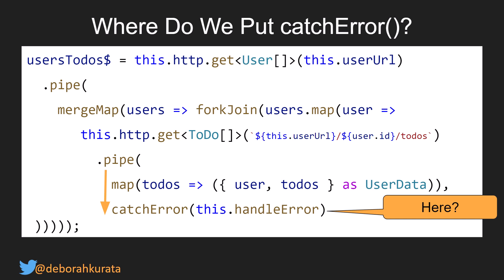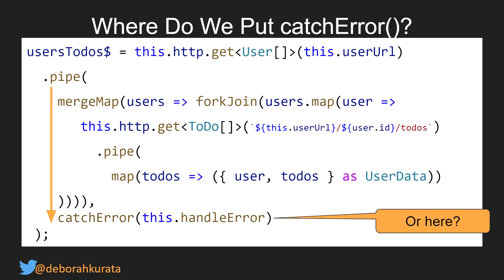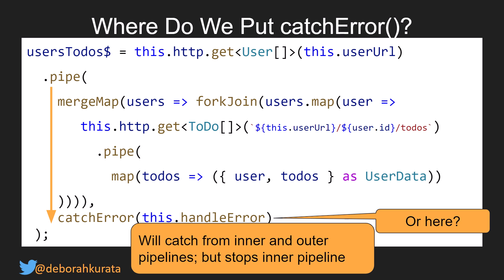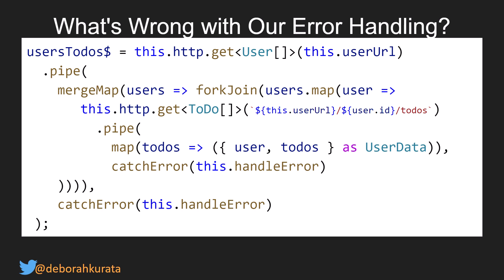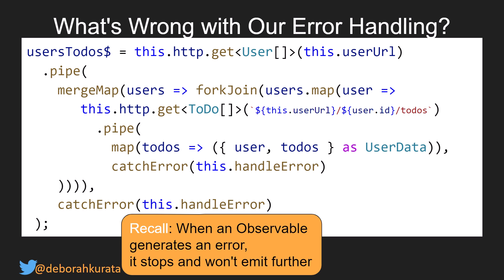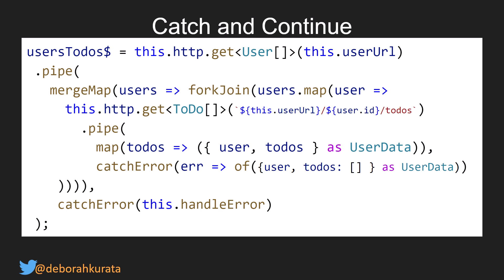If we put catchError in the pipeline of the inner observable, it won't catch errors from our outer observable. If we put it in the outer observable, it catches errors from both inner and outer pipelines, but it stops the inner pipeline. We could do both — but recall that when an observable generates an error, it stops and won't emit any further. So if there's an error getting the to-dos for one user, none of the user's data is returned. Instead, we'd prefer to catch and continue for the next user.